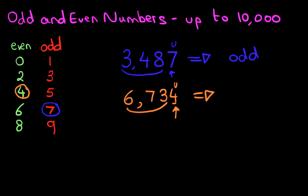It's an even number. If 4 is an even number, then the whole number, 6,734, is also an even number.